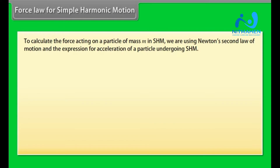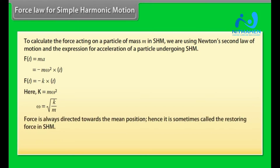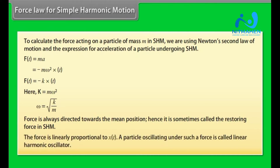Force law for simple harmonic motion: to calculate the force on a particle of mass m in SHM, we use Newton's second law. F(t) = mA = −mω²X = −KX, where K = mω², so ω = √(K/m). The force is always directed towards the mean position and is called the restoring force. Since force is linearly proportional to X(t), a particle oscillating under such a force is called a linear harmonic oscillator.